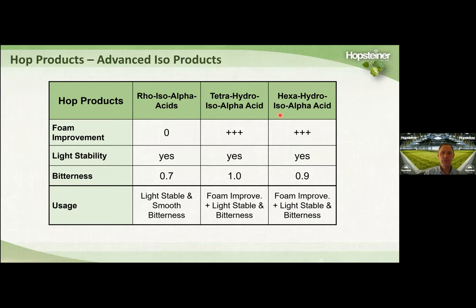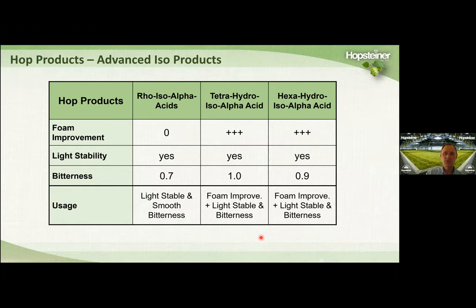To review these three reduced hop acids: rho is not used for foam enhancing, whereas Tetra and hexa are. All three are light stable. Bitterness intensity: rho is only about 70% that of iso-alpha acids; Tetra has the same bitterness intensity as iso; and hexa is almost as bitter as iso. Rho is used for making light stable beers but also non-light-stable beers for smoothing out bitterness. Tetra is used for light stable beers or for just enhancing foam and lacing of regular hopped beers. The same applies to hexa.